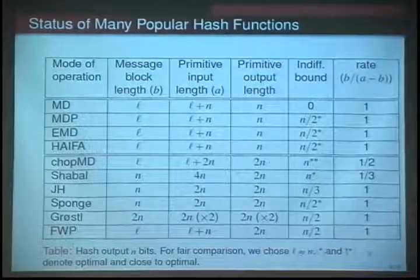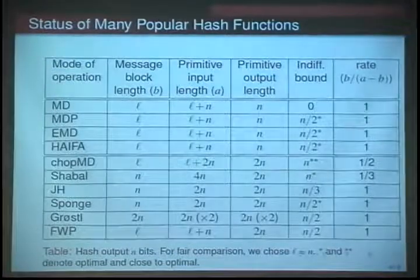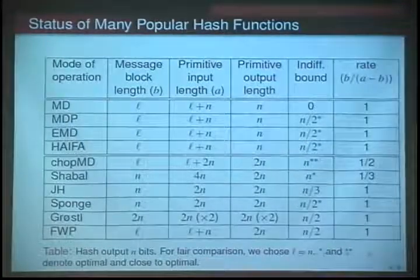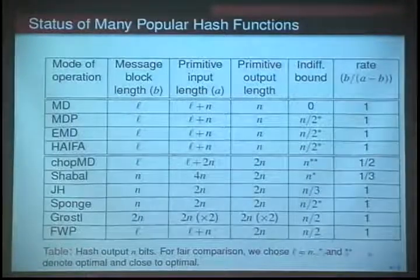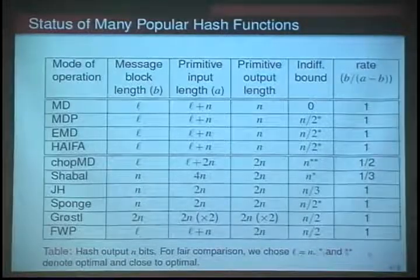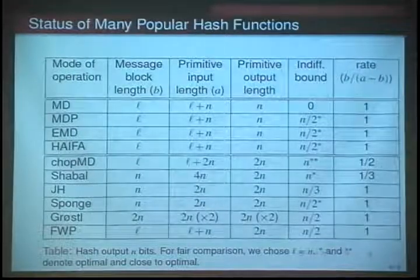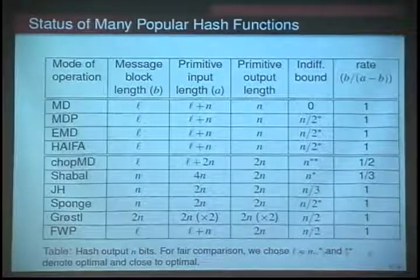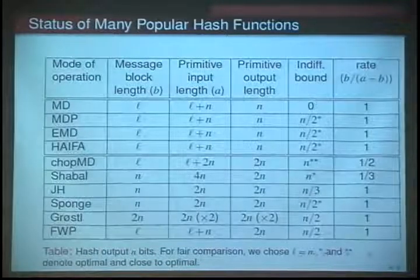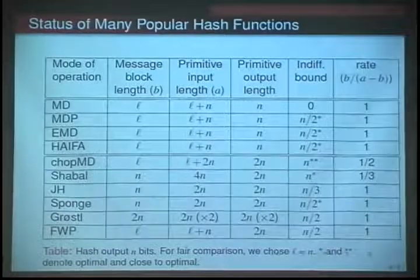You can appreciate that the numbers are more manageable here — we have only n and l. Looking at the status of popular hash functions: the first four are called single-pipe, where the primitive output length is n and the hash output length is always n. Then there are a series of improvements where the primitive output is 2n. The rate, which shows how fast a function is, shows that many wide pipes are actually less than 1, and some are exactly 1.